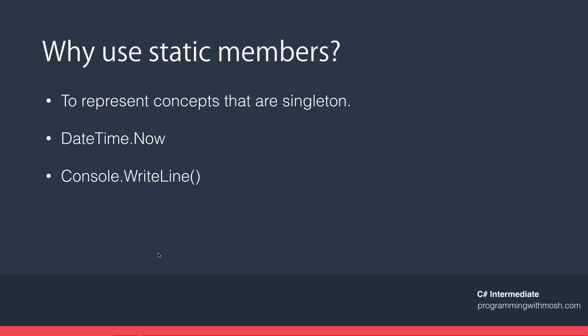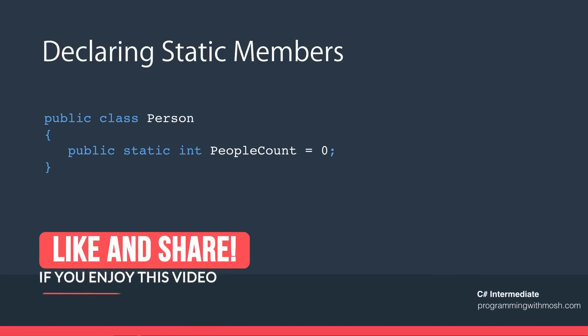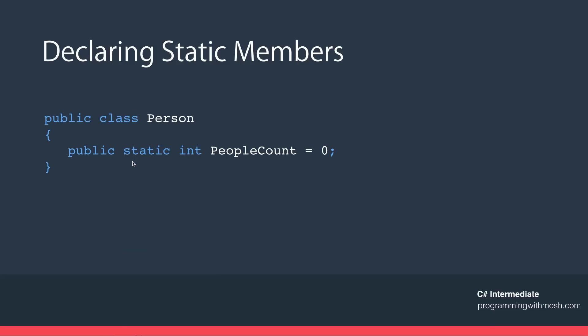We use static members to represent concepts that are singleton — meaning there should be only one instance in memory. For example, the current DateTime: it doesn't make sense to have different objects each claiming a different current time. Similarly, Console.WriteLine — a console application has only one console, so the Console class and all its members are static. To declare a member as static, simply add the `static` keyword after the access modifier. You can use static on any class member.